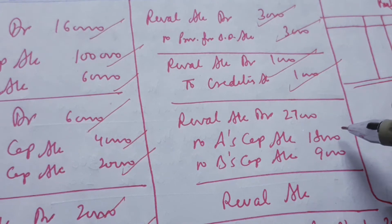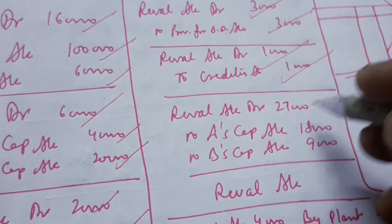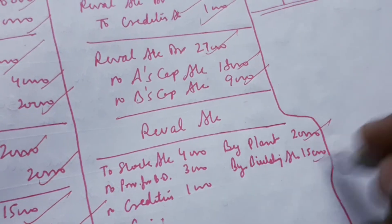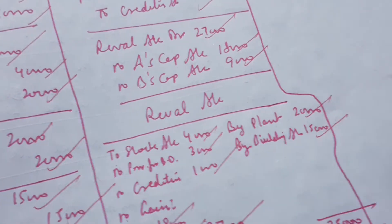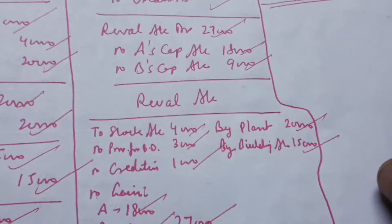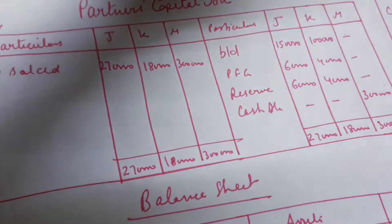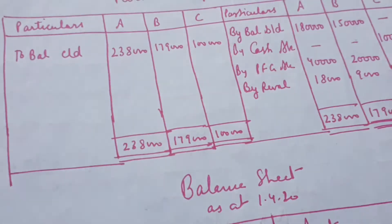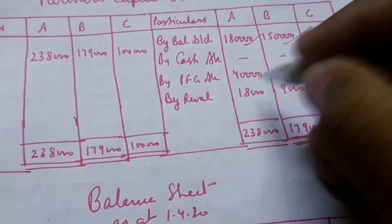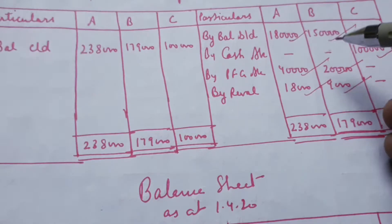Checking the profits: the revaluation is 20 and 15, so the revaluation result is 27. In the revaluation account, the benefit is on the credit side and the profit is on the debit side. This completes the revaluation account. Now the capital account and balance sheet are constructed. The capital balances are given for partners A and B. Premium is always given to A and B in old ratio. Revolution profit is distributed, and closing balances are recorded.